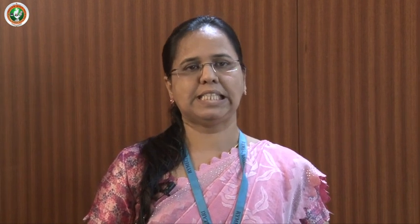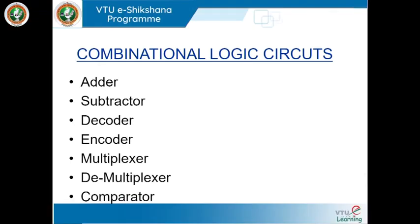Assume that we want to perform the addition of two numbers. We know that in digital systems we can perform addition, subtraction, or multiplication. This addition is performed with the help of a circuit called an adder. Whatever tasks we perform in digital systems have been done with the help of either combinational logic circuits or sequential logic circuits. Let us understand how these two differ with an example.